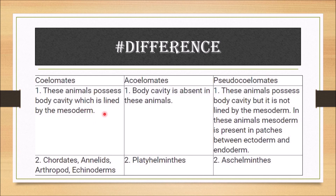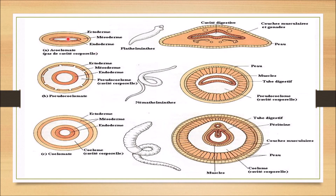The animal that possesses a body cavity lined by mesoderm is called a coelomate. In acoelomates, the body cavity is absent, and mesoderm is present as a patch between the ectoderm and endoderm. Examples: coelomates include arthropods and echinoderms; acoelomates include platyhelminthes.